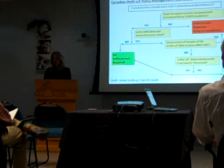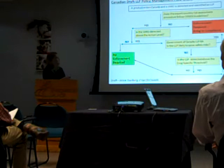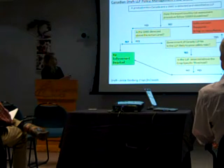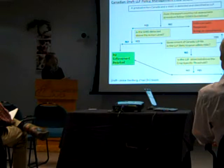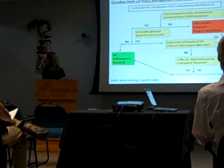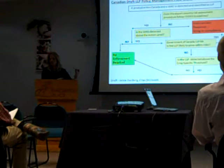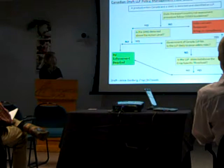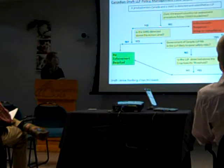The government has their own diagram, but here's a simplified version. So here's the process: a product enters Canada, a GMO is detected, and it's identified as low-level presence. The first question is: did the exporting country that did the full risk assessment follow Codex Plant Guidelines? If the answer is no, enforcement will be required. If yes, we go to the next question: is the GMO detected above the action level — 0.1 or 0.2 — meant to get rid of dust? If it's not above it, no action and no enforcement will be required.